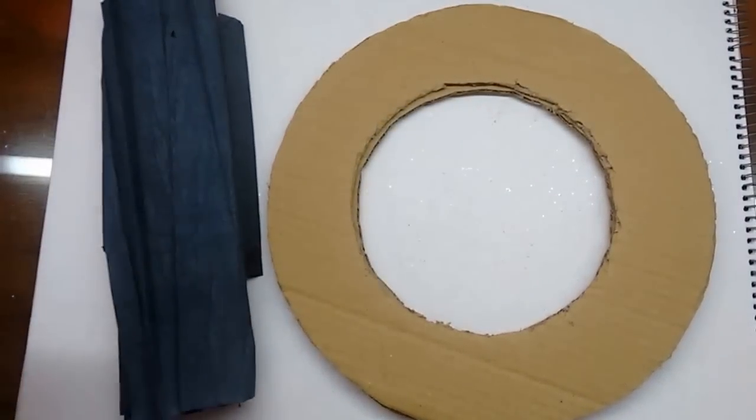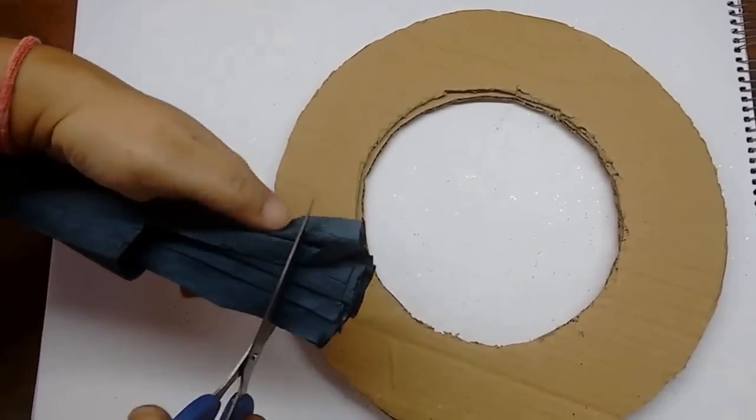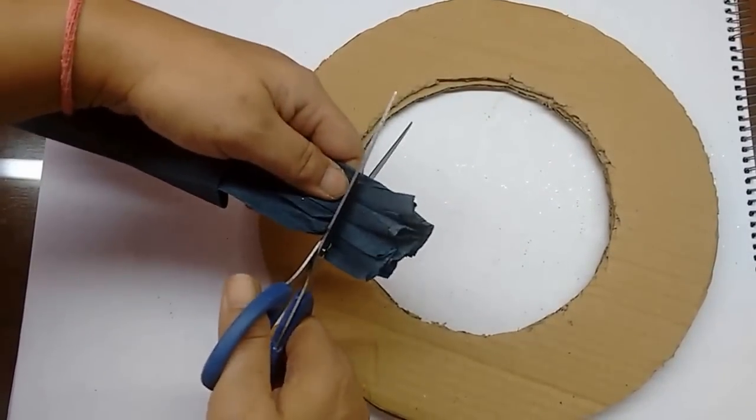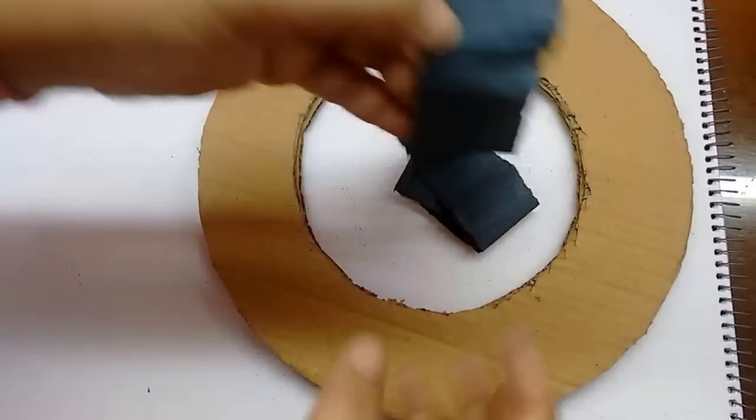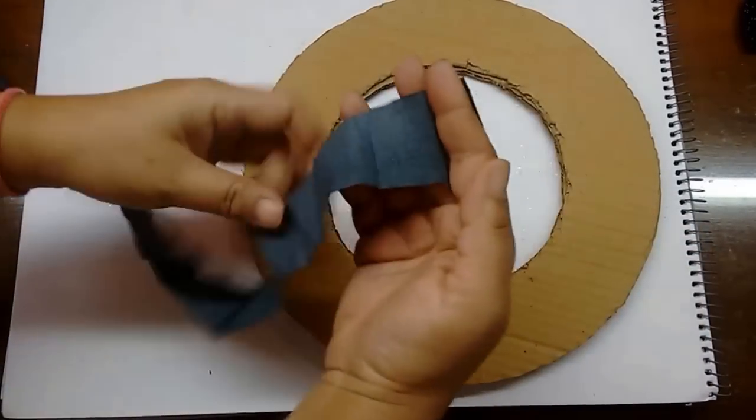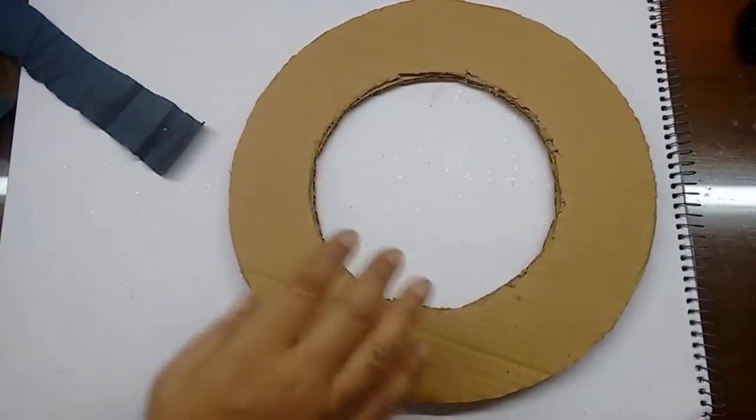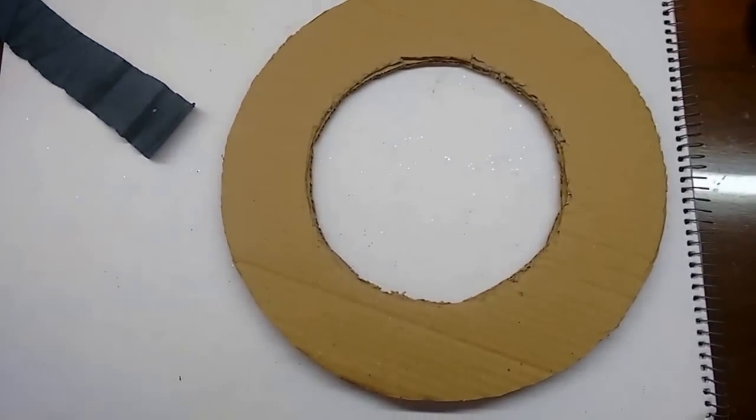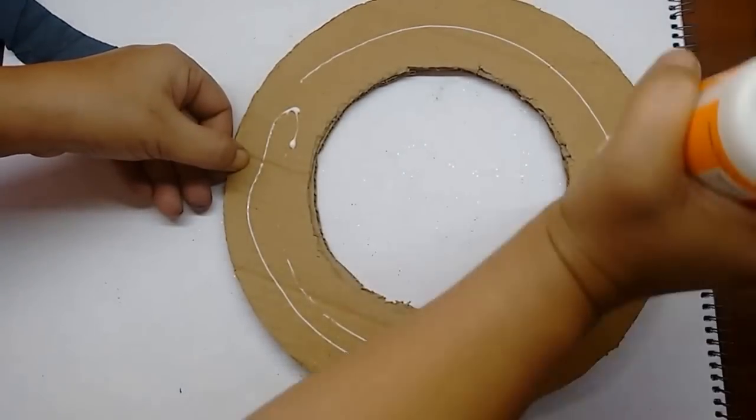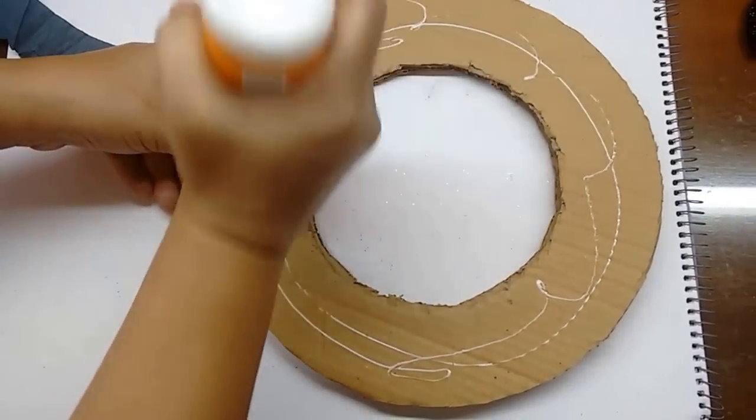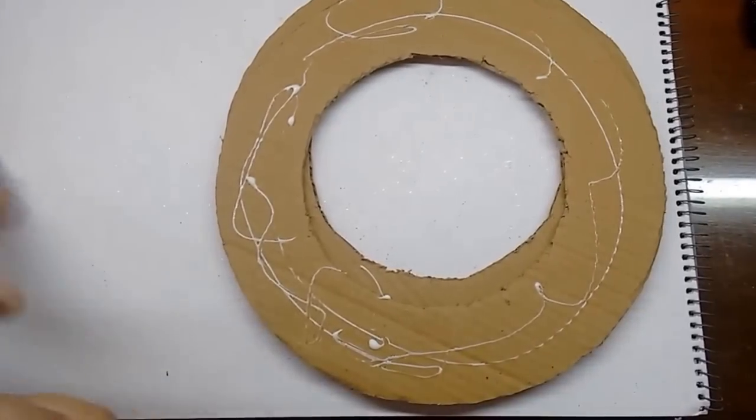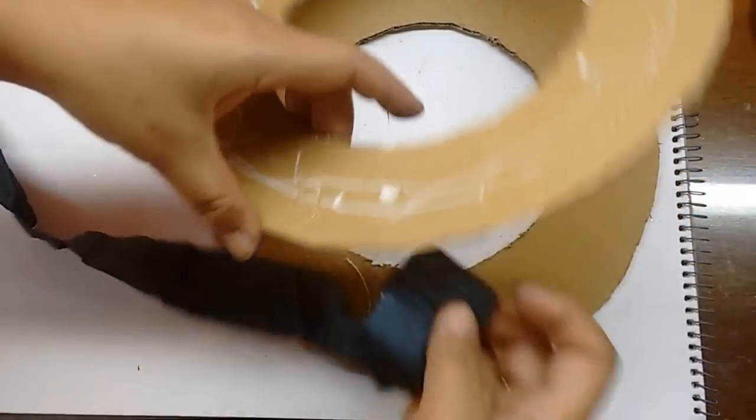Now take the crepe paper, the black colored crepe paper, and cut out about one inch wide strip from it. And this is how it will look. Now just stretch it out a bit and then apply glue on one of the sheets.